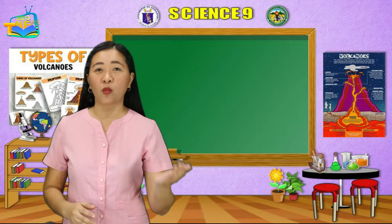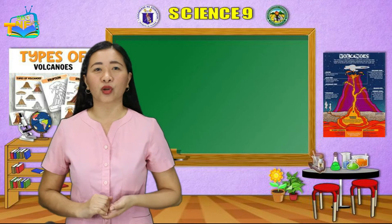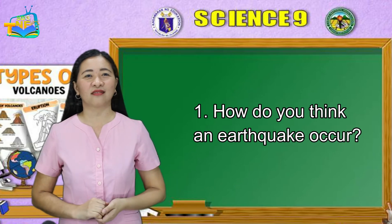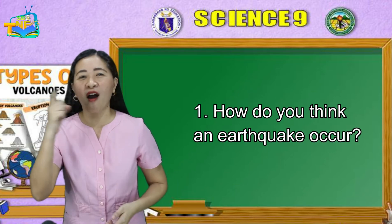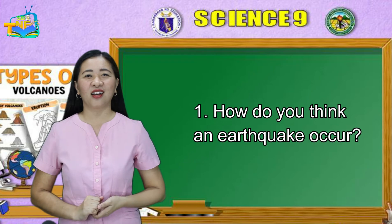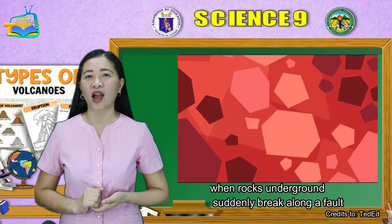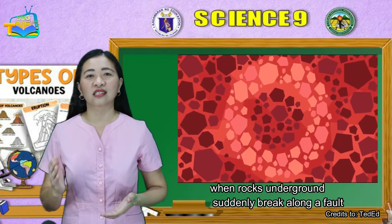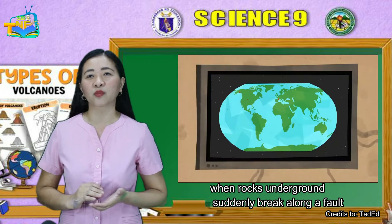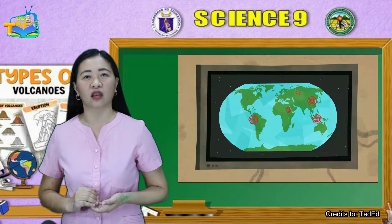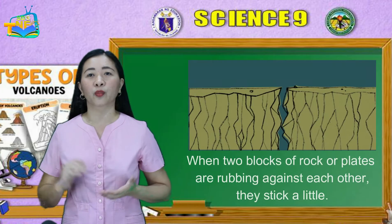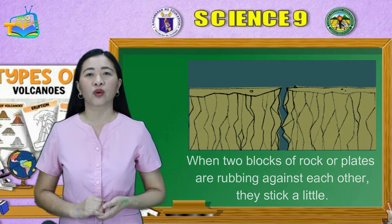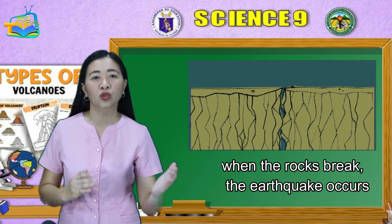First, let us see how much you remember about earthquakes. How do you think an earthquake occurs? Earthquakes are usually caused when rock underground suddenly breaks along a fault. This sudden release of energy causes the seismic waves that make the ground shake. When two blocks of rock or plates are rubbing against each other, they stick a little. When the rocks break, the earthquake occurs.